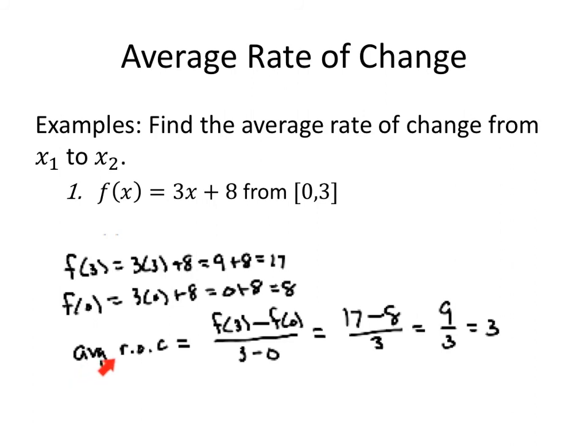My average rate of change, ROC, rate of change, is given by the slope f of 3 minus f of 0 over 3 minus 0. Notice this is a form of a difference quotient. That's 17 minus 8 over 3. Simplify the numerator, 9 over 3, which is 3.